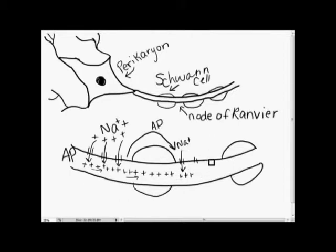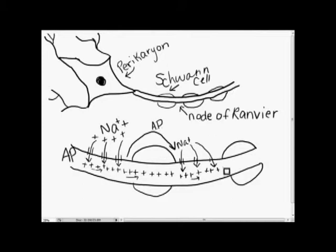The action potential moves along the entire axon in this fashion. The jumping allows a message to be sent 30 times faster than unmyelinated axons because there are no gates to open in the myelinated region.